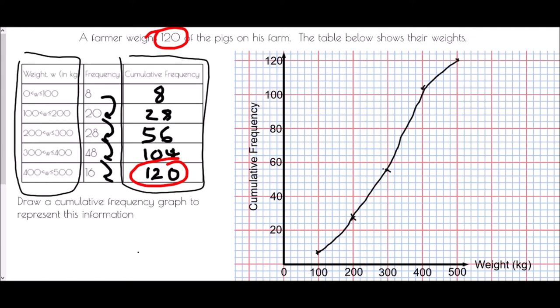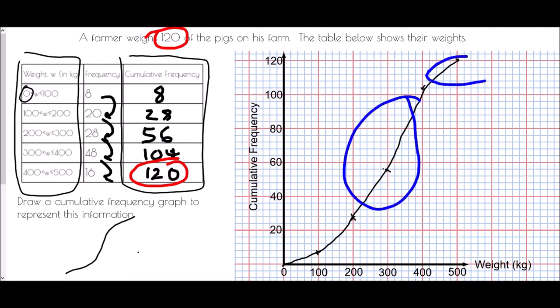The other thing we need to think about is just where this graph should actually begin. The key is that we know the absolute minimum value must have been zero — none of the pigs weighed less than zero kilograms — so we can actually start our graph at (0, 0). The shape of the graph is very important: any cumulative frequency graph generally will have the shape of an S. Things generally increase quite quickly in the central area of the graph and then tail off at either end.